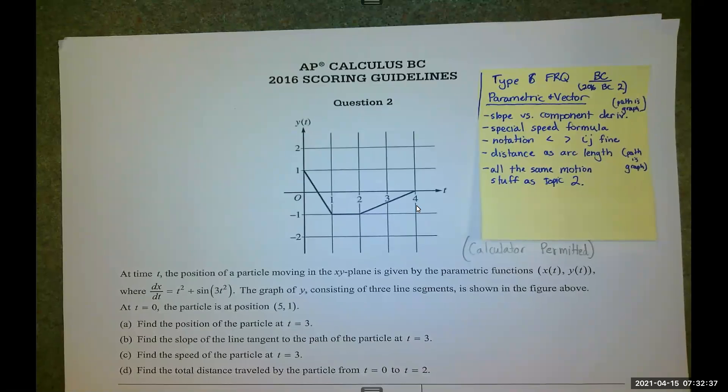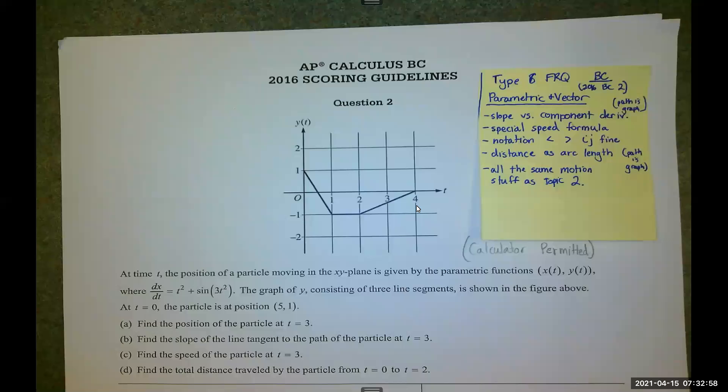We're looking at topic 8. Topic 8 is another BC exam-only topic. Focuses in on two of the three non-rectangular systems we studied: parametric, vectors, and polar. This is pretty much what the questions are on. There's not a whole lot else there.